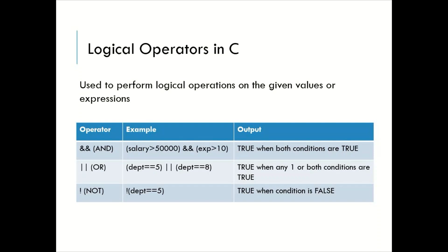Next, we have logical operators in C. Logical operators are used to perform logical operations on the given values or expressions. The logical operations in C are AND, OR, and NOT. Logical AND is denoted by double ampersand sign. OR is denoted by two straight lines, and NOT is denoted by exclamation sign. Let us understand how these operators work with an example.